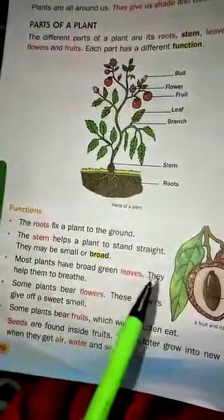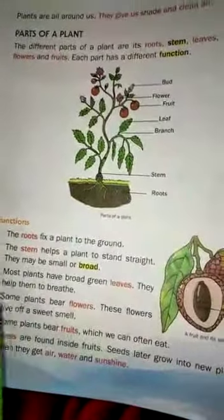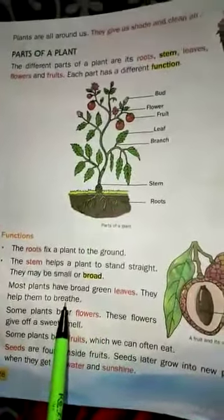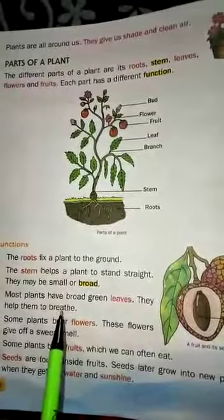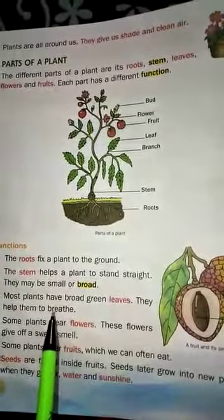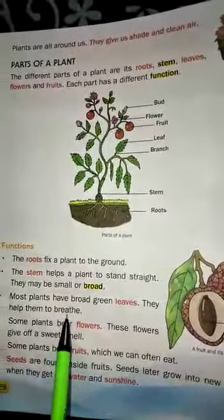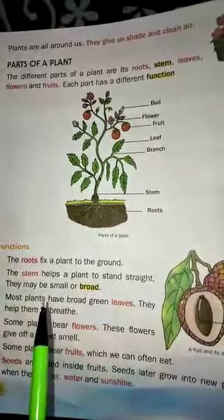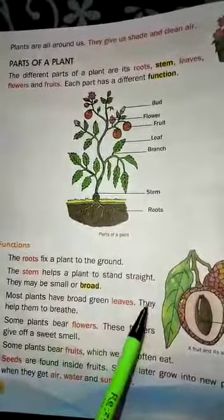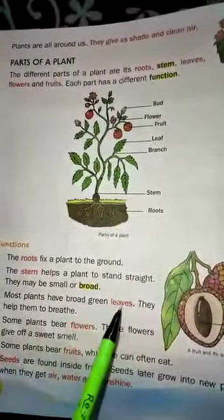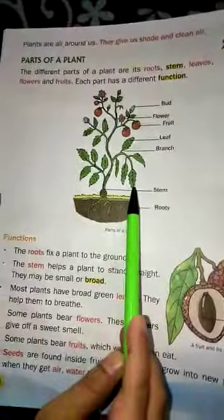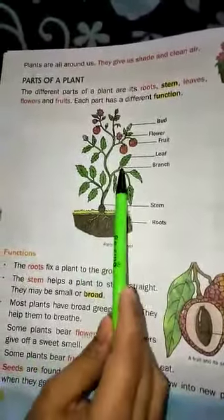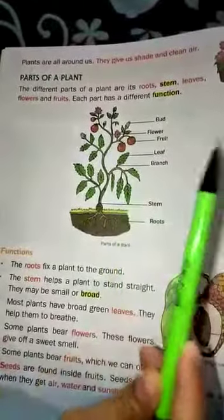Most plants have broad green leaves. They help the plant to breathe. Like human beings, plants also need breathing. We human beings have a nose, and with the help of our nose we can breathe. Similarly, plants need leaves for breathing. With these leaves, a plant can breathe.